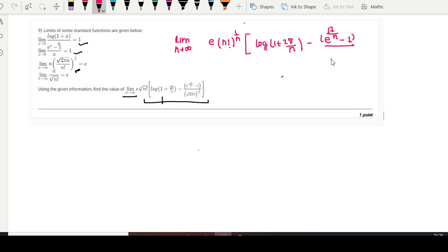We will split this term for our convenience. So we can write this as e times n factorial raise 1 by n times log(1 plus 28 by n).